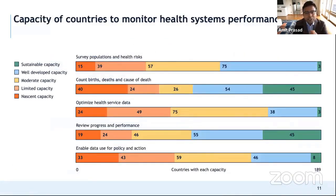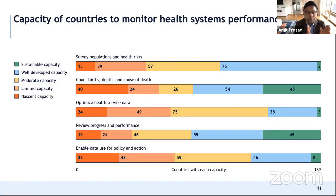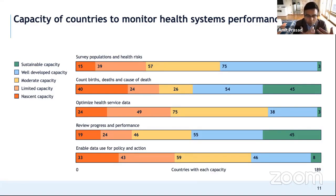We also looked at the capacity of countries to monitor health systems performance using the SCORE tool, produced by WHO and many member states. This examines population surveys, civil registration and vital statistics, health service data, and performance review. Countries with sustainable capacity to count births and deaths number only around 45. Many countries have lower capacity, and there is a lot of work to be done to help countries develop better health data and health information systems to monitor these indicators on a regular basis.